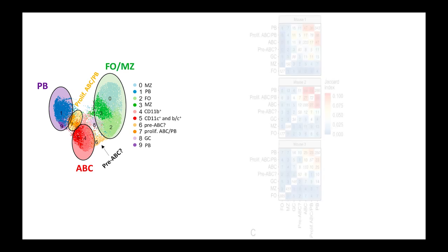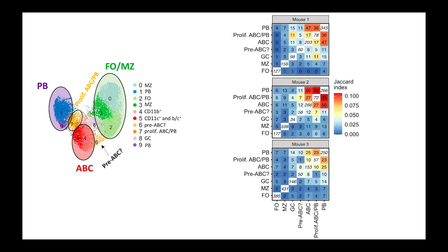Using single-cell RNA-seq with 5'VDJ analysis on total MRL-LPR splenic B-cells, we identified naive, ABC, and plasmoblast clusters, as well as some putative transitional states. We were able to identify numerous shared B-cell clones between the ABC and plasmoblast compartments, shown here as the darker red boxes.